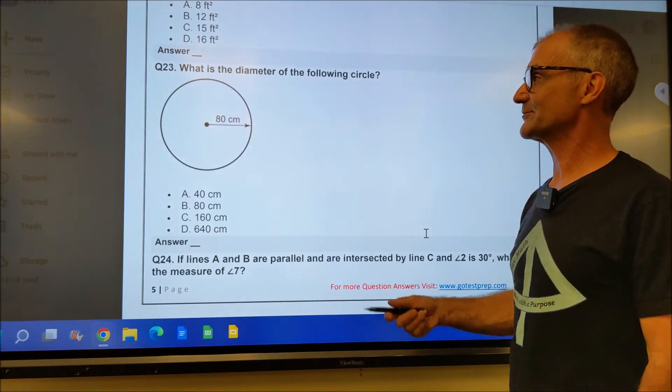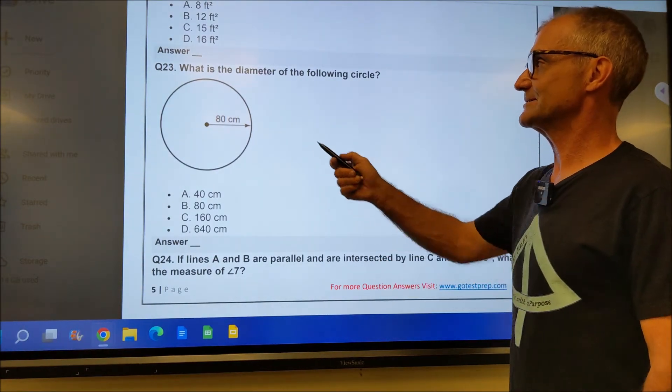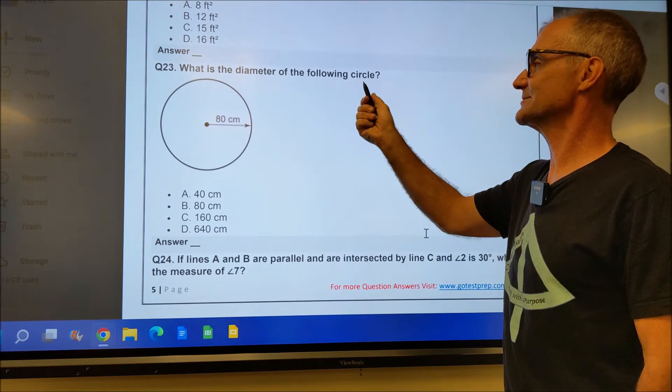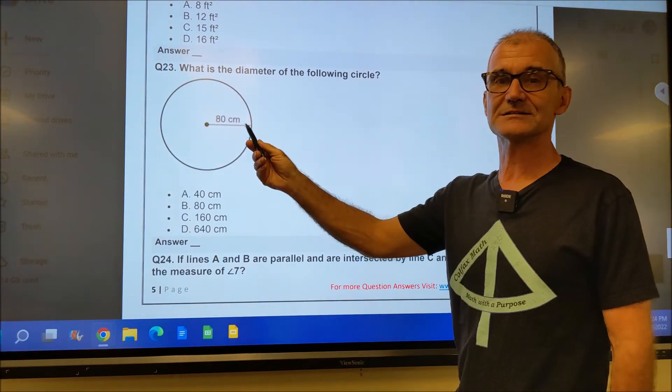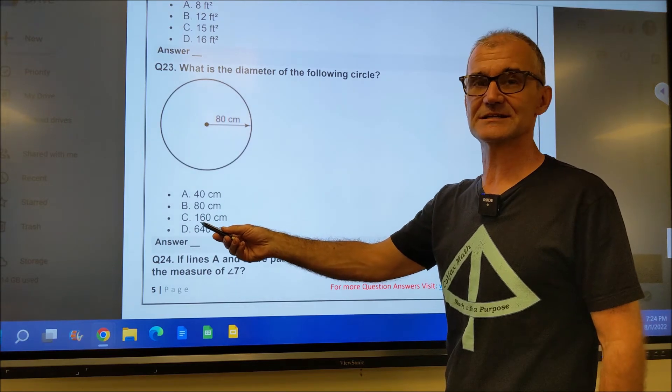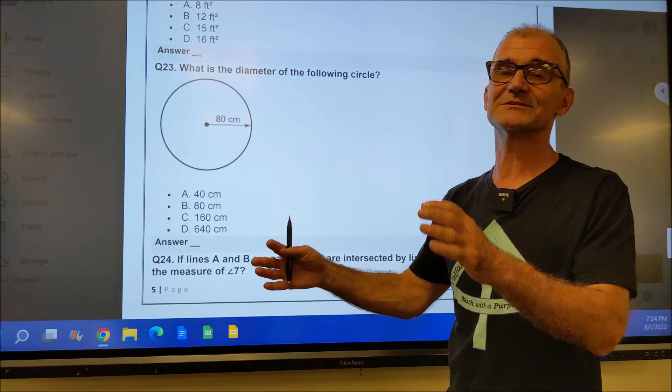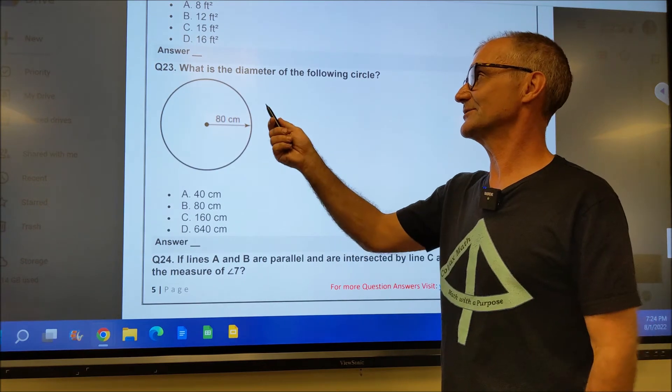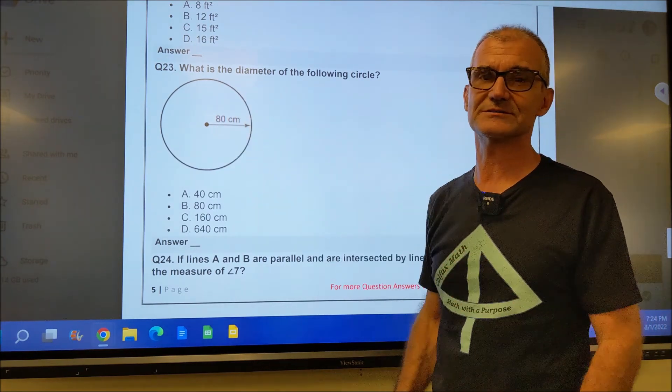Here's a practice ASVAB math problem. This is a pretty easy one. What is the diameter of the following circle? Well, it gives you a radius, and you know the diameter is 2 times the radius or 160. This is a good problem because it really points out it's not that much math. It's really about vocabulary and knowing the parts of a circle.